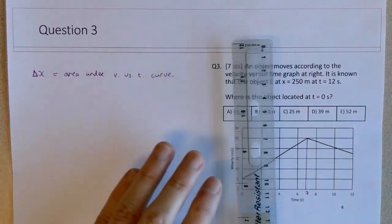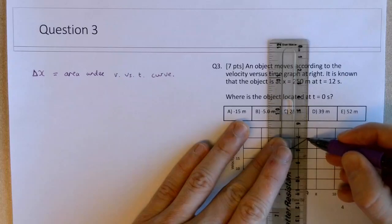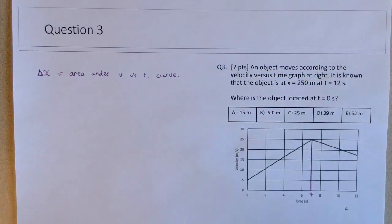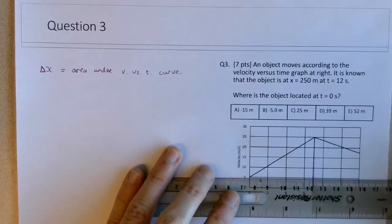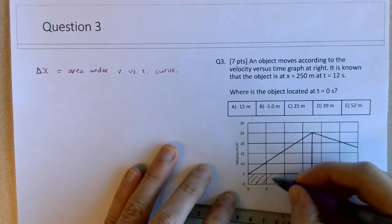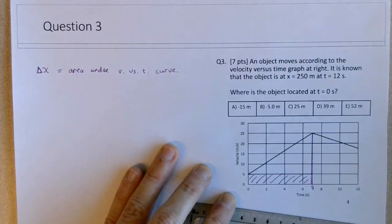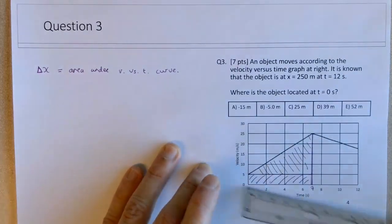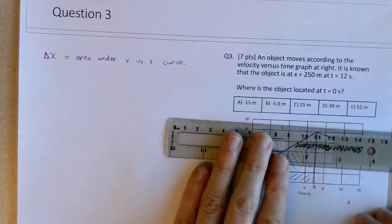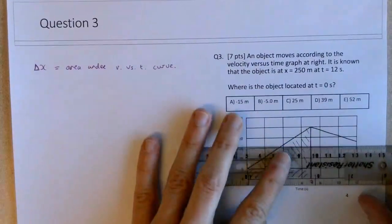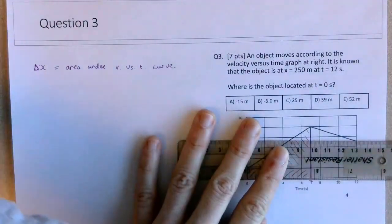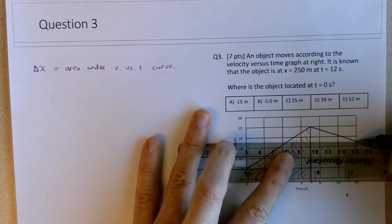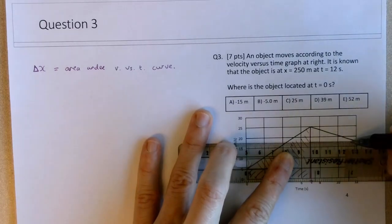I might divide this area up into four different shapes. Start with this rectangular shape here, then this triangle here, then this triangle here. Then from 7 seconds to 12 seconds I'll also break it up into a triangle. And this velocity at 12 seconds looks like it's 17.5, between 15 and 20.